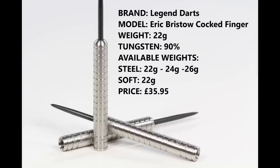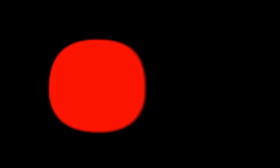I'm reviewing the 22 gram version, the 90% tungsten. You can also get them in 24 gram and 26 gram in steel tip, and also 22 gram in soft tip, and they retail for £35.85.